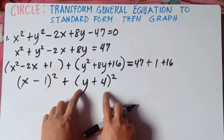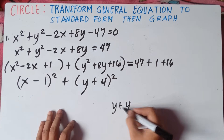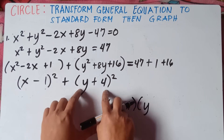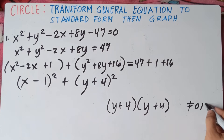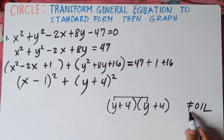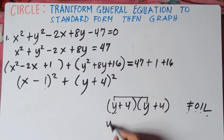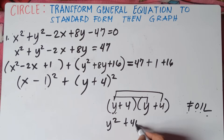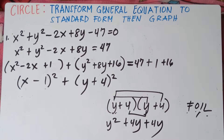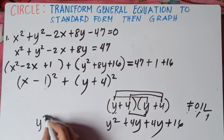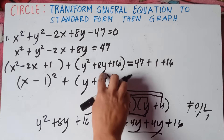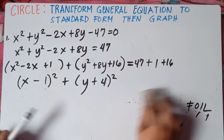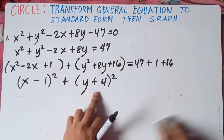Let's verify using the FOIL method for y plus 4 squared, meaning y plus 4 multiplied by itself twice. First: y times y is y squared. Outer: y times 4 is positive 4y. Inner: 4 times y is positive 4y. Last: 4 times 4 is positive 16. Combining like terms: y squared, 4y plus 4y is 8y, copy 16 — same answer. So to make it short, simply get the square root of the first term, square root of the last term, copy the sign of the middle term, then squared.